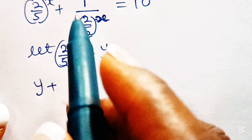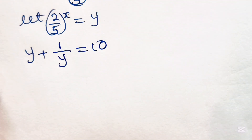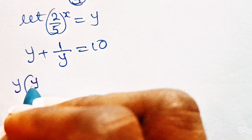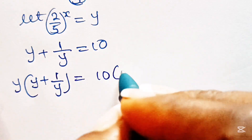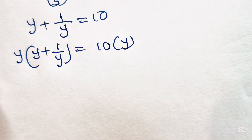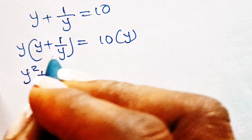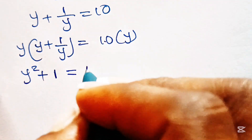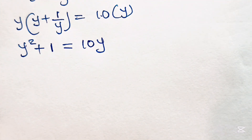So if we say that, we are going to have y plus 1 over y is equal to 10. Now to clear the fraction, we are going to multiply through by y. So we have y times y plus 1 over y, equals 10 multiplied by y as well. y times y gives us y squared, and 1 over y times y gives us 1, equal to 10y.